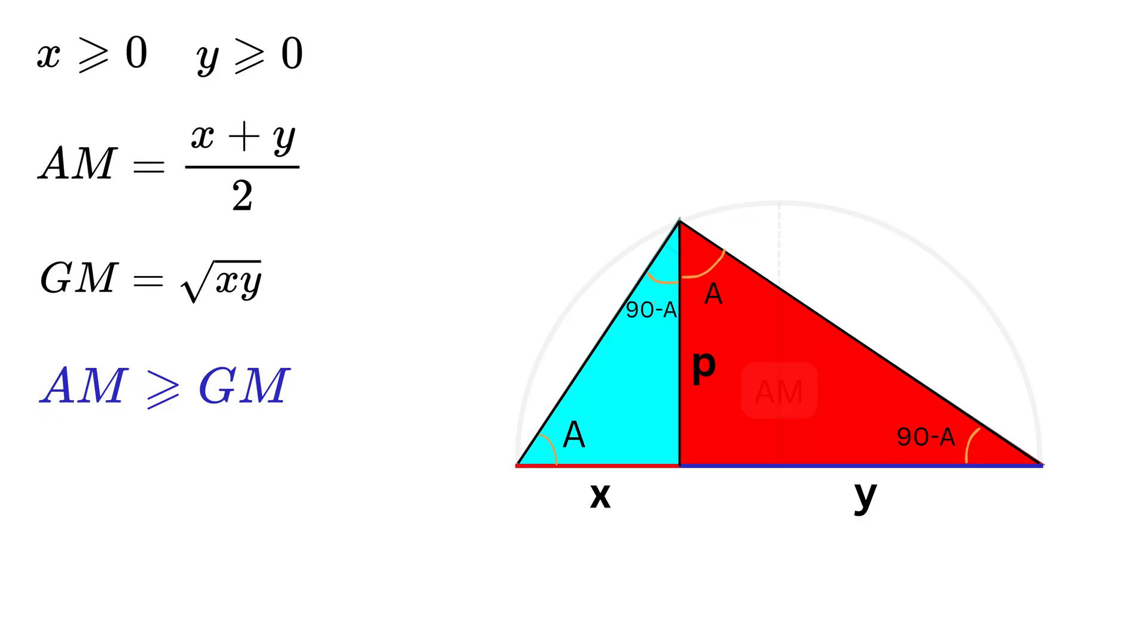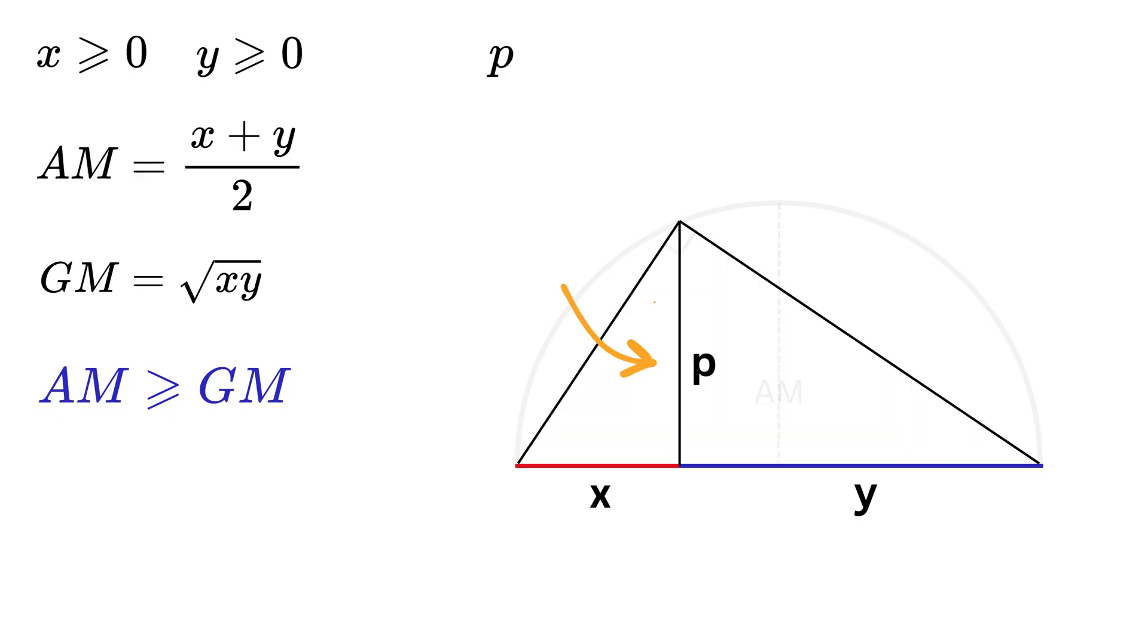This means both these right triangles have the same angles, and thus they are similar. So we get this side length, or p, over this side length, or x, equals this side length, or y, over this side length, or p. This means p squared equals x times y, or p equals square root of xy.